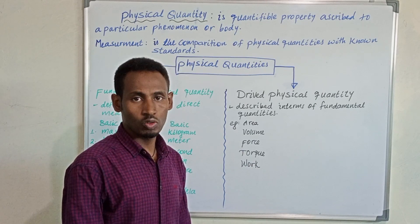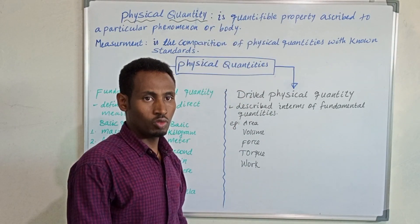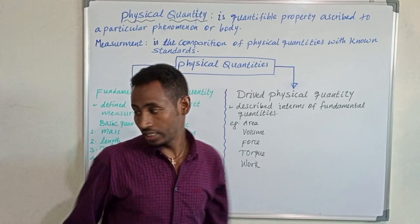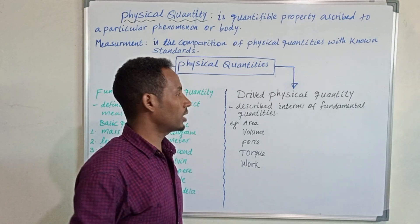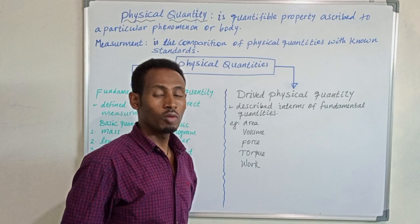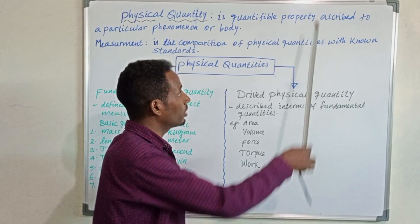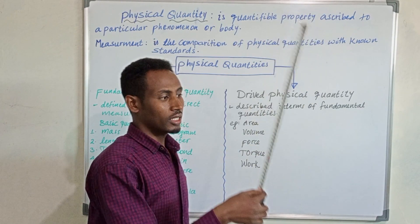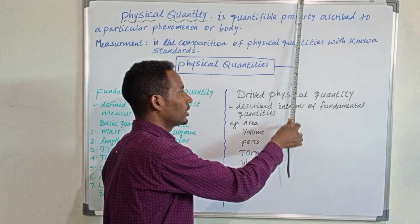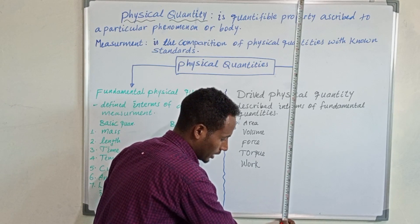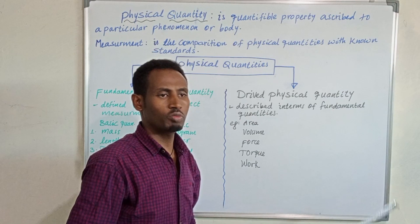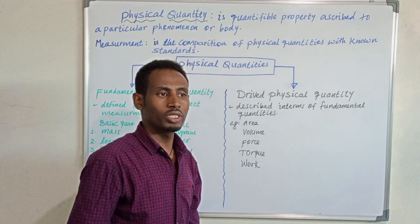We have to know about measurement in order to have quantitative information. Measurement is a comparison of a standard with unknown quantities. For example, the height of the whiteboard is not known, but we have a standard to compare. Using a measuring tape, it says 90 cm — the height of the board is 90 cm.